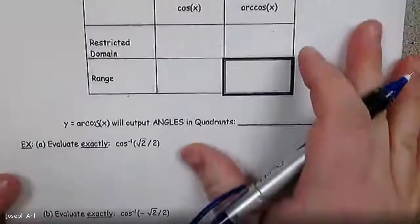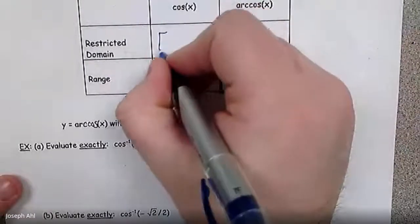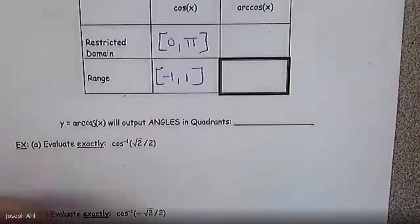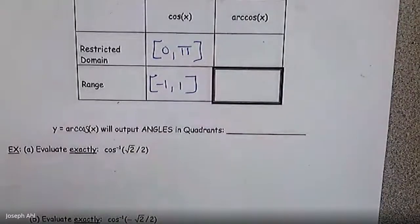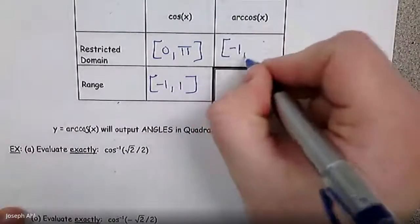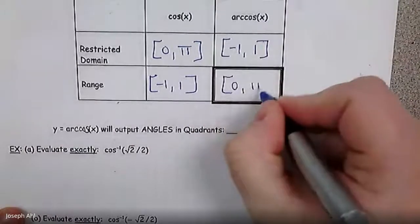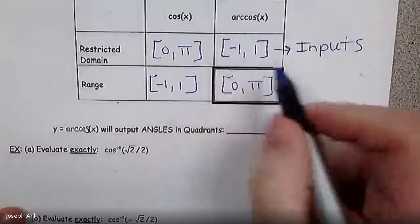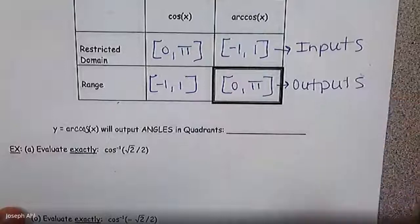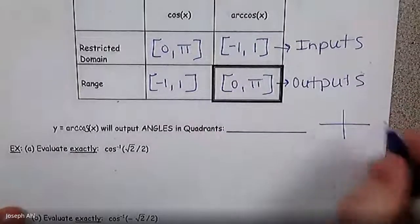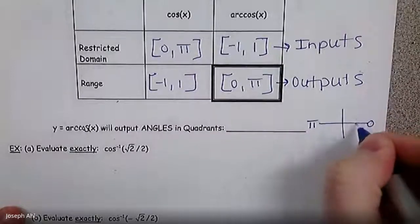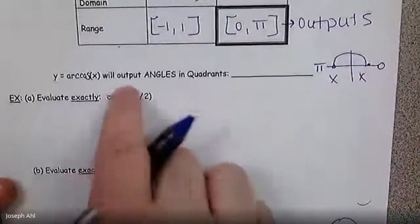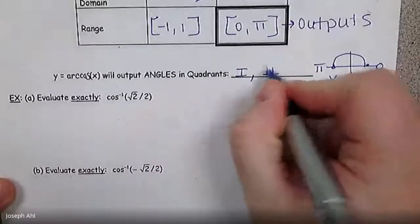For arc cosine, we took cosine x and cut it off from 0 to π, and the range was −1 to 1. For arc cosine (the inverse), those switch: the domain is −1 to 1, and the range is 0 to π. Answers for arc cosine never go into quadrants 3 and 4, so arccosine x will output angles in quadrants 1 and 2.